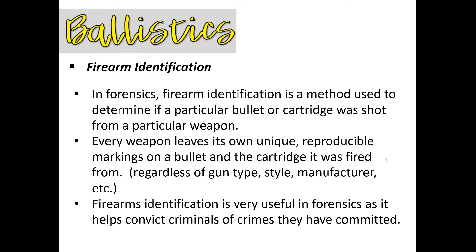In forensics, firearm identification is a method used to determine if a bullet or cartridge was shot from a particular weapon. Every weapon leaves its own unique, reproducible markings on a bullet and on the cartridge it was fired from — regardless of gun type, style, or manufacturer. You can think of it as a ballistics fingerprint. Forensic examiners can test-fire a suspect's gun and compare the marks on the crime scene bullet to the test-fired bullet to determine if there's a match.